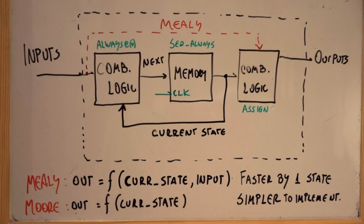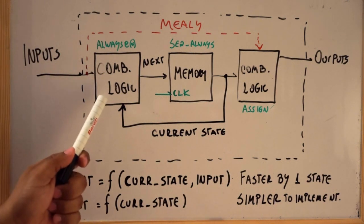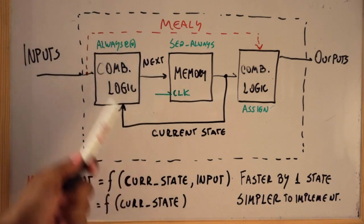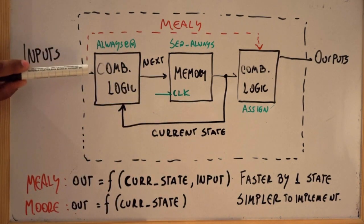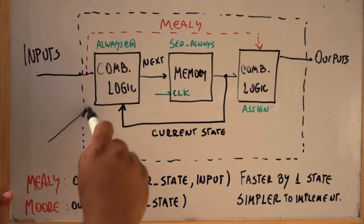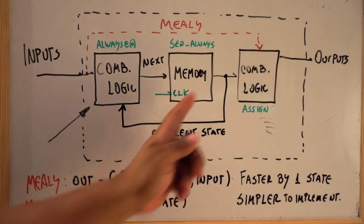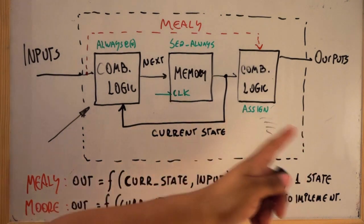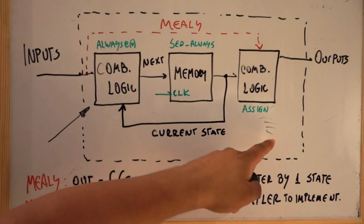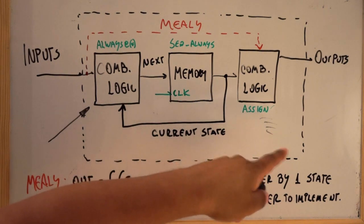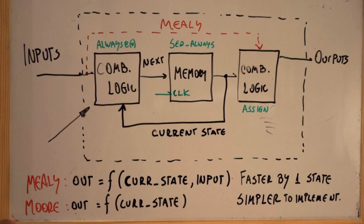Now, before switching to the example — this combinational part that calculates the next state is always a sequential always block. Here is where you want to put the logic of your algorithm. Normally this is a case statement full of states that are going to be calculated. The output part is just a group of assigns — like if the state is this, assign to the output value A or B or C. Just don't forget to put the default case, otherwise we are going to create a latch. Now we're going to switch to a simple Moore-type state machine and implement it in Verilog.